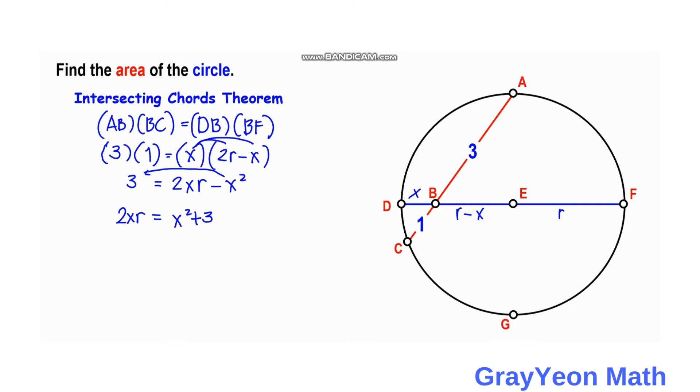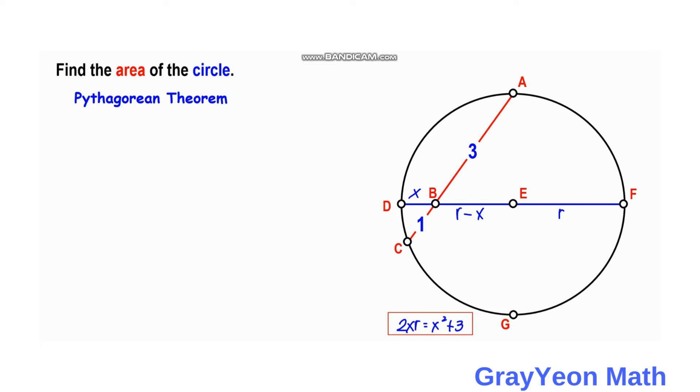We can form a line from point A to E and form a right triangle. Segment AE is the radius, so we label it as R. This forms a right triangle where the legs are 3 and R minus X, and the hypotenuse is R.